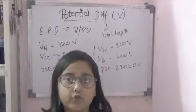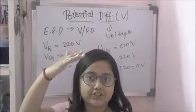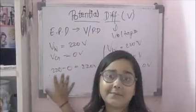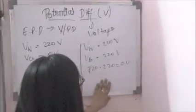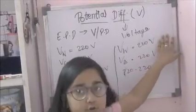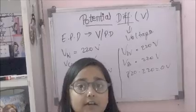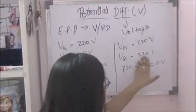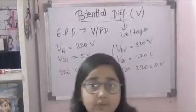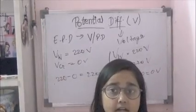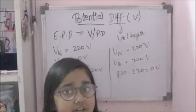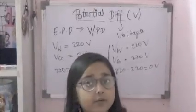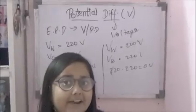Current always flows from higher potential to lower potential. When a human touches the mains, current flows through our body as a conductor. But in the case of a bird sitting on the wire, the wire potential is 220 volts and the bird's body potential is also 220 volts. So the potential difference is 0 volts — no current flows and the bird does not get an electric shock.